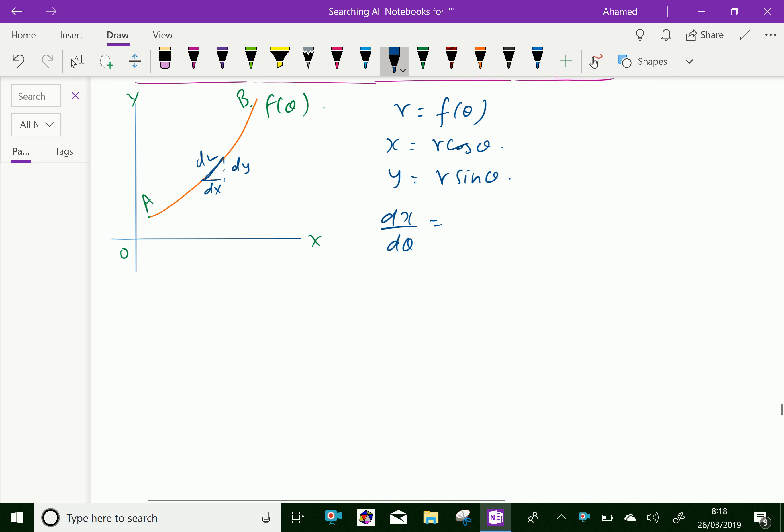Expanding, we get r dash square cos square theta plus r square sin square theta minus 2 r dash r cos theta sin theta, plus r dash square sin square theta plus 2 r dash r sin theta cos theta plus r square cos square theta. Look at this: the minus 2 r dash r cos theta sin theta and plus terms cancel.